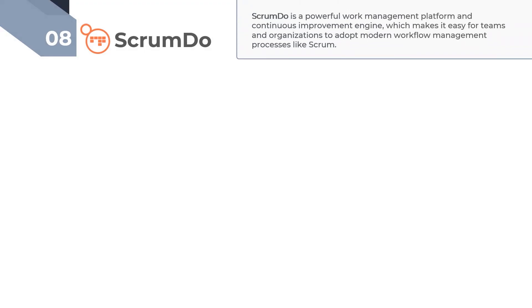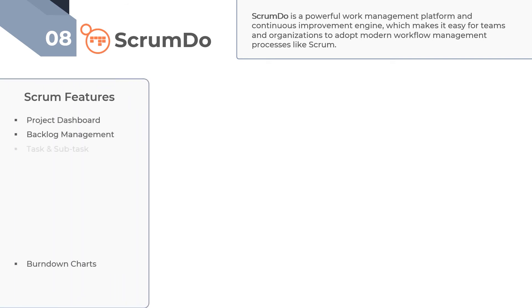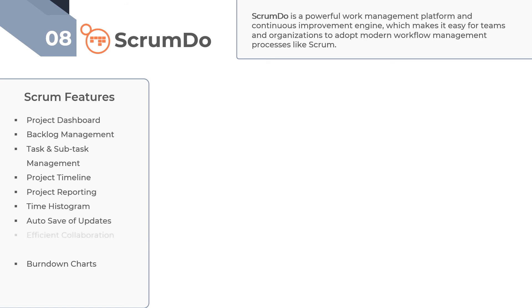The next tool to make it to our list is ScrumDo, one of the effective tools that facilitates the smooth execution of Scrum. This tool allows you to manage almost any project online. We'd mainly recommend ScrumDo if you're looking for a platform you can scale Agile. One of its powerful features is that it enables you to monitor the progress of a project with precise accuracy, thus making it an effective reporting Scrum application. These reports include lead time histogram, burndown and burn-up charts, cumulative flow diagrams, and much more. The dashboard view also lets you quickly glance at your project performance.